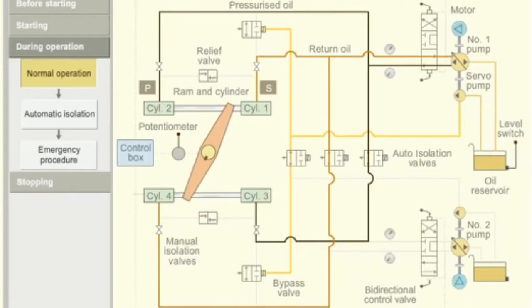When the rudder stock reaches the desired helm angle, the potentiometer sends a signal to the control box. The control box sends a signal to bi-directional control valve. The valve is pushed back to its initial position.